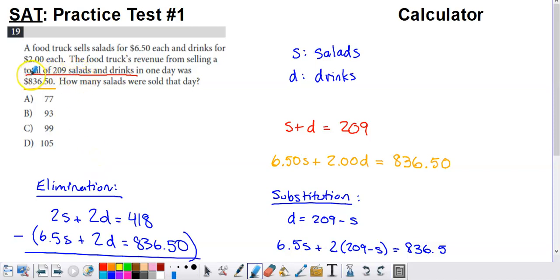So what I underlined right here in red is a statement about the total number of items sold. If I let S be the number of salads they sold and D be the number of drinks they sold, if I add S and D together, I've got to get 209. If I add these individual types of items together, I've got to get a total of 209 items sold.